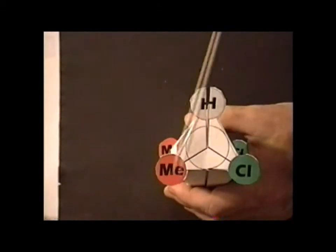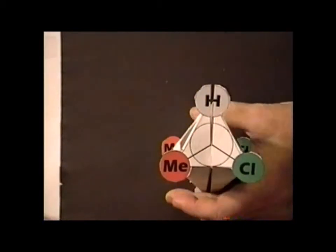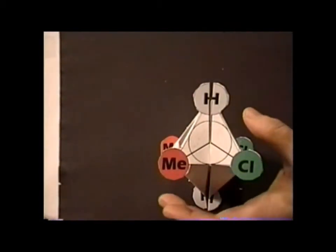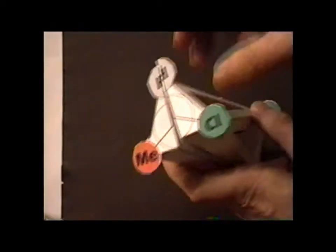Now, so we notice that red doesn't go into green, methyl doesn't reflect into chlorine. So we do not have a mirror along this line. But the reason for building the model this particular way is it does have a symmetry operation for which this works out.